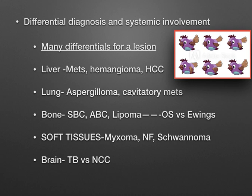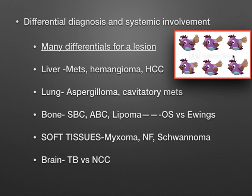There will be many differentials for a lesion. In this image, all lesions look alike until you look in detail — there are minor differences. Unless you characterize the lesion with CT enhancement patterns or MR signal intensity patterns, you cannot reach a conclusion. For a liver lesion, it could be metastasis, hemangioma, or HCC — most look alike on plain imaging, but contrast CT or MRI differentiates them. In the lung, a lesion could be an aspergilloma, cavitating metastasis, or a cavity with a blood clot — proper assessment is needed.